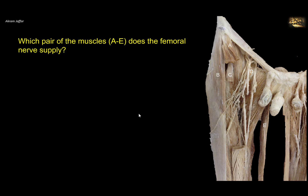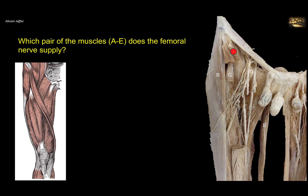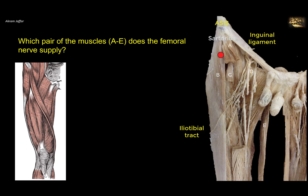Which pair of muscles A to E does the femoral nerve supply? We have first to identify the muscles. A is a stump of a muscle attached to the anterior superior iliac spine — the anterior superior spine provides attachment for the inguinal ligament and a muscle, which is the sartorius muscle. So A is the sartorius. B is attached to the iliac crest posterior to the anterior superior iliac spine proximally, and distally it is attached to a thickening of the deep fascia of the thigh located laterally, called the iliotibial tract. This is a thickening of the fascia latae, and hence the muscle is called the tensor fasciae latae, supplied by the superior gluteal nerve.